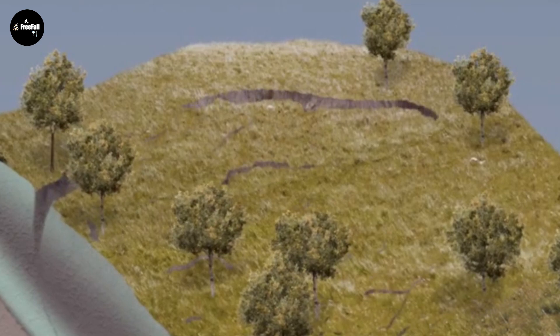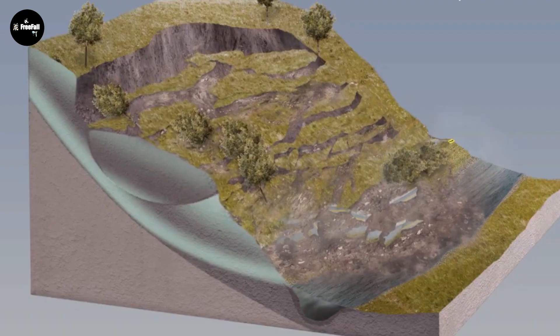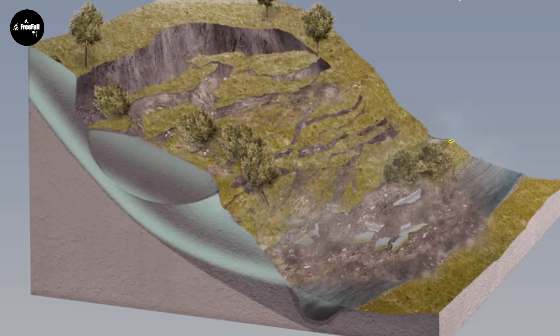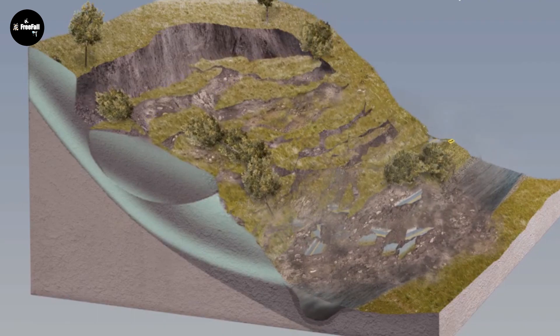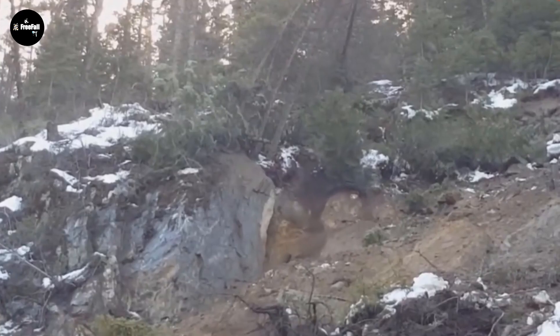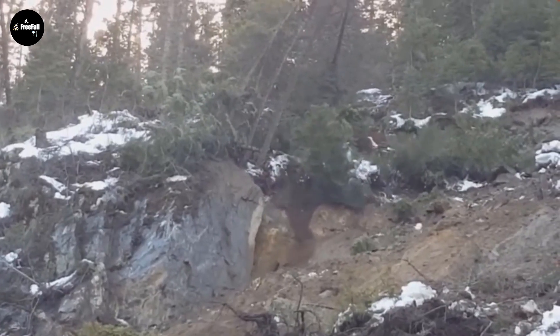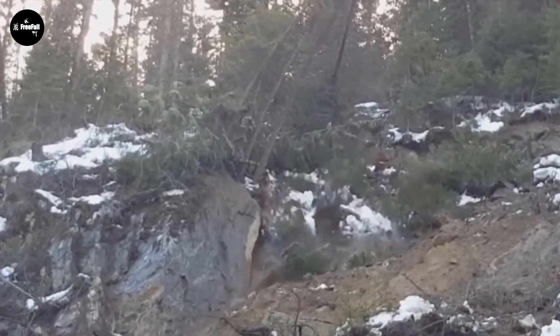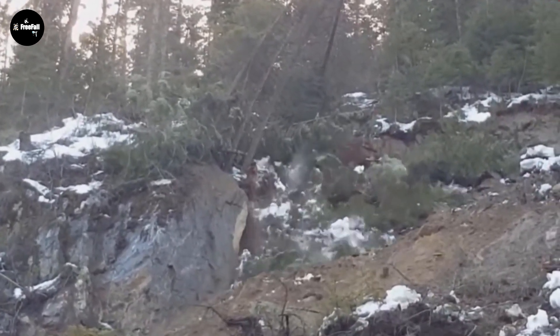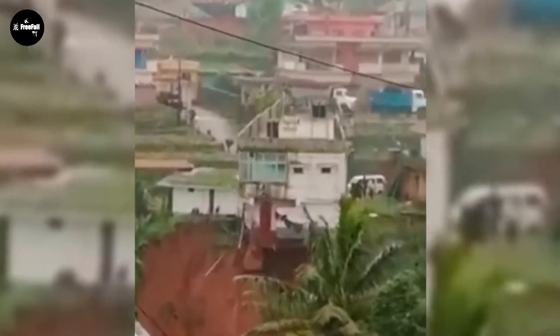Protecting vegetation cover, increasing water retention of the basin, and limiting the ability to concentrate flood flows are key measures. The damage that landslides bring cannot be fully counted. Although this is one of the natural phenomena, humans are the main cause contributing to the terrible scale of landslides.